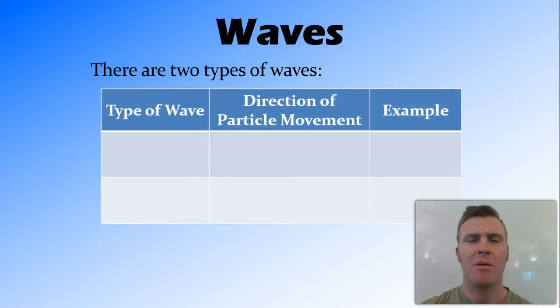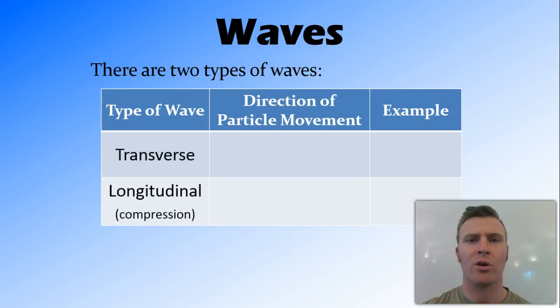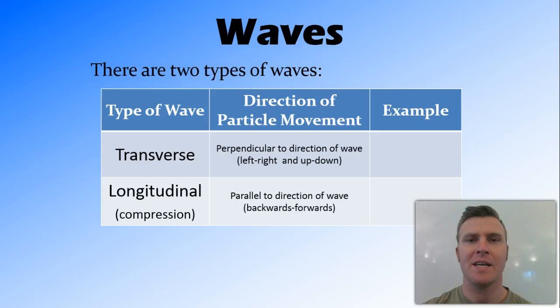From the previous video, you'll remember that we have two types of waves. We have transverse waves as well as longitudinal waves, which are sometimes referred to as compression waves. The direction of particle movement in transverse waves is perpendicular to the direction of propagation, so either left and right or up and down, while longitudinal waves, the direction of particle movement is parallel. So it's backwards and forwards in the plane that the wave is propagating.